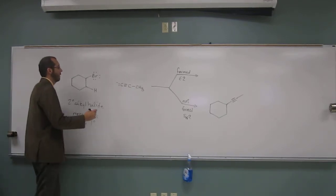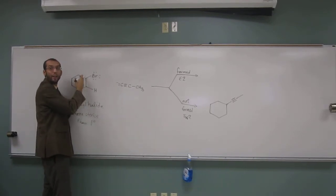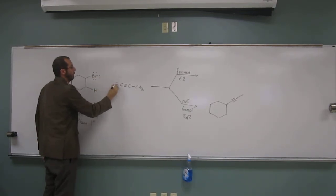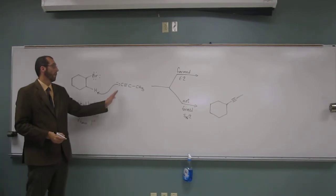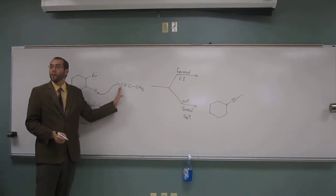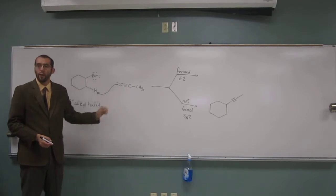So what you'll find is that instead of just doing the backside attack and letting the leaving group leave, you'll do the acid-base reaction. So remember, where did this come from? This came from a terminal alkyne, right? So we can make a terminal alkyne back from it. It's a pretty strong base, remember what we were talking about?